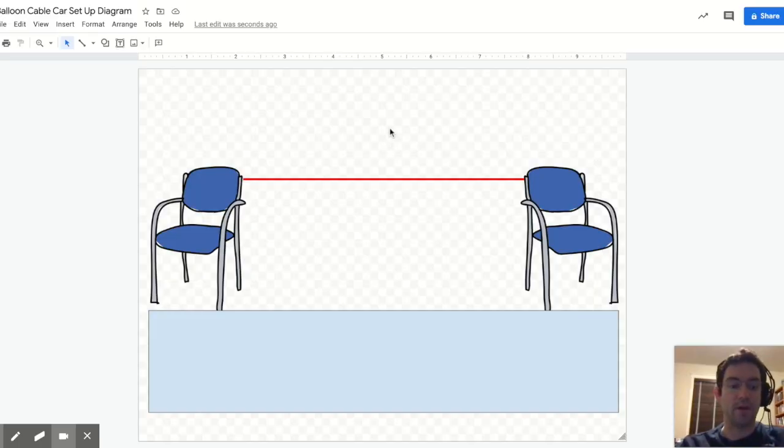Here's the setup. So for the string, what I did is I attached it to two different chairs at the same height, and then I pushed the chairs apart until the string was really tight. You could also use a doorknob or other item and attach it to another item to make sure that it's super tight so that the cable car can move along that string.